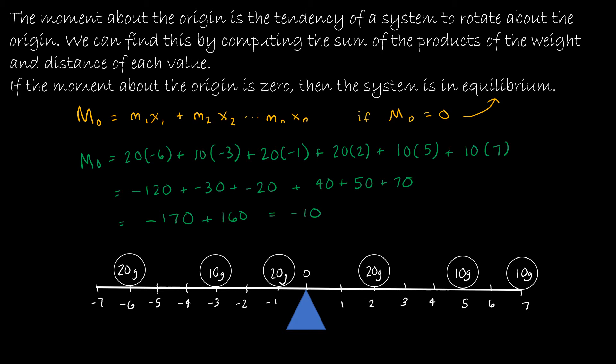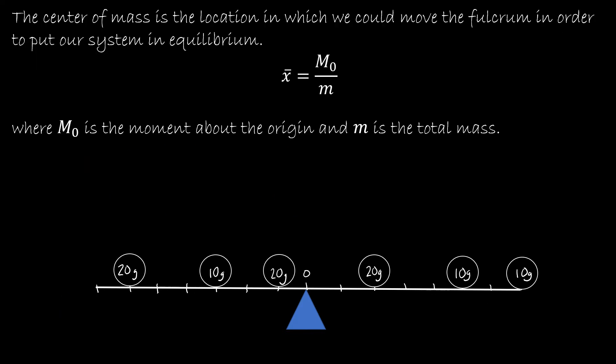The moment is -10, which is not zero, so this side is heavier and that is the direction the seesaw would rotate. This brings us to our discussion of the center of mass. The center of mass is the location where we could move the fulcrum to put our system in equilibrium. If you've taken statistics, you know that x-bar means an average — and that's essentially what we're doing here, finding the average to know where to move the fulcrum.